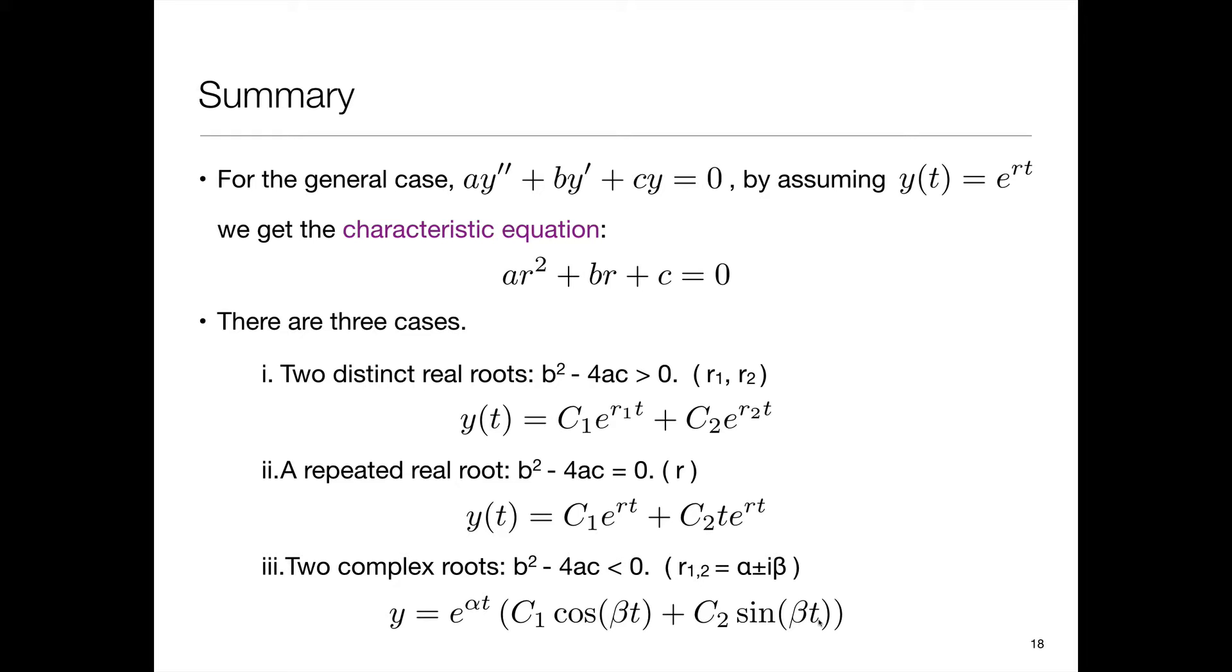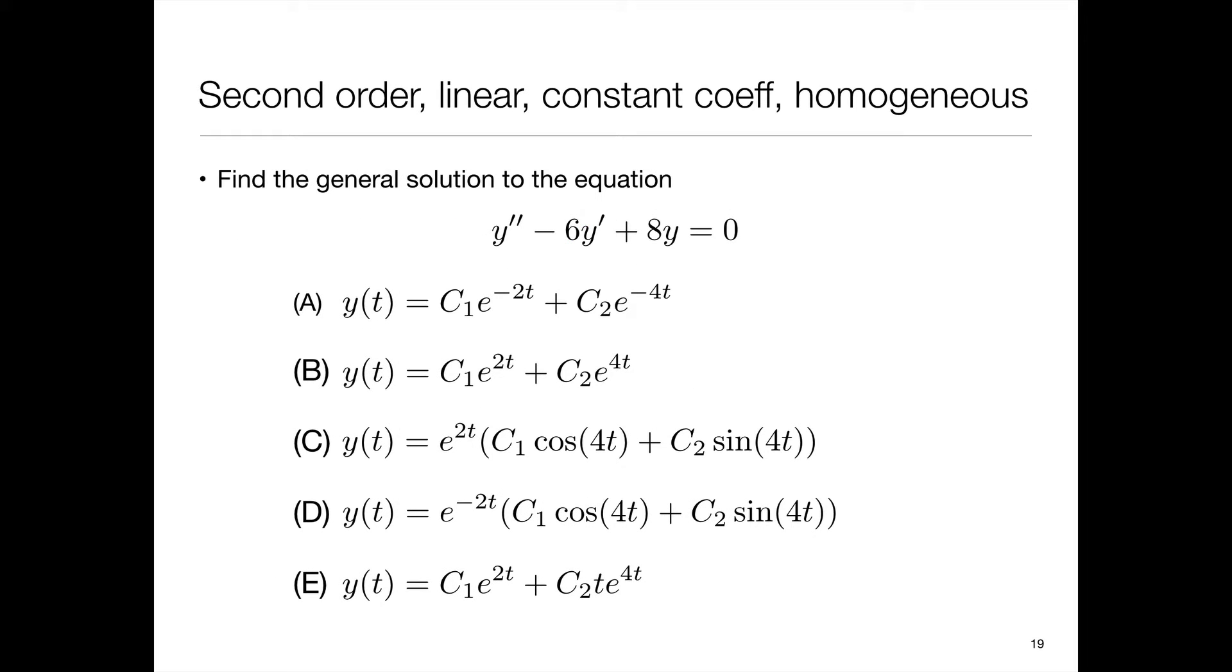So let's look at a few examples. Find the general solution to the equation y double prime minus 6y prime plus 8y equals 0. Here are some options. Maybe you should pause the movie and figure it out before we move on.